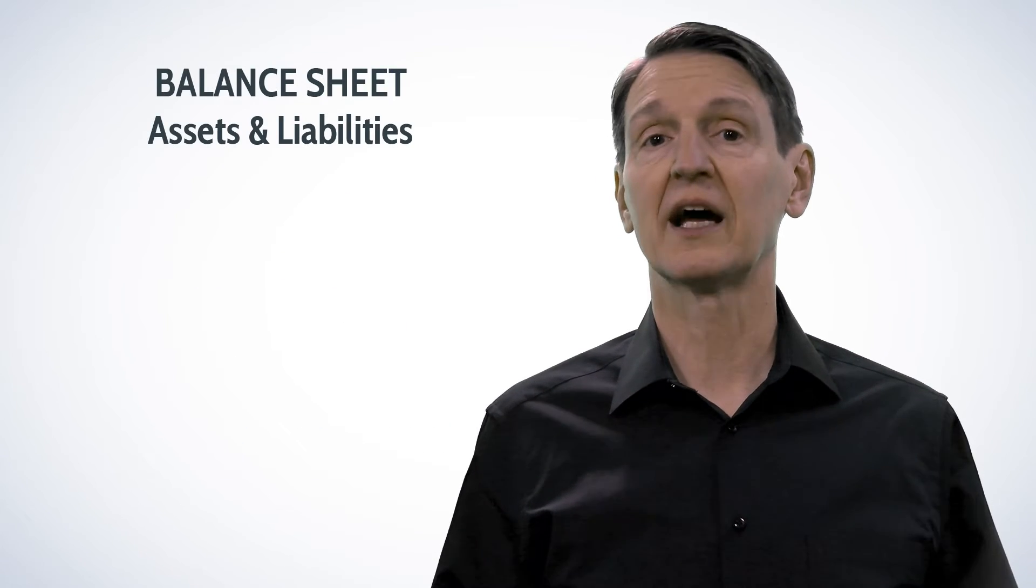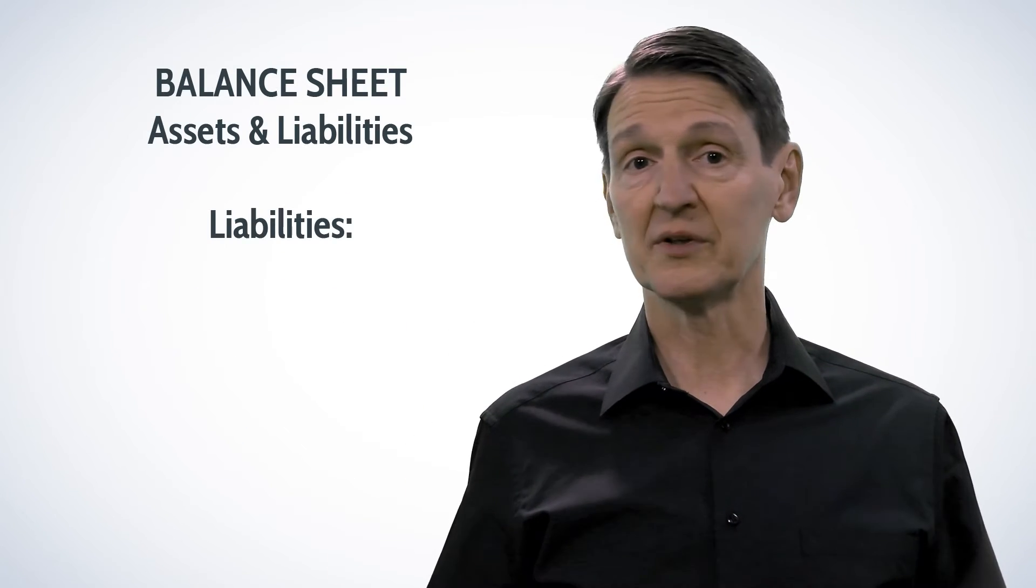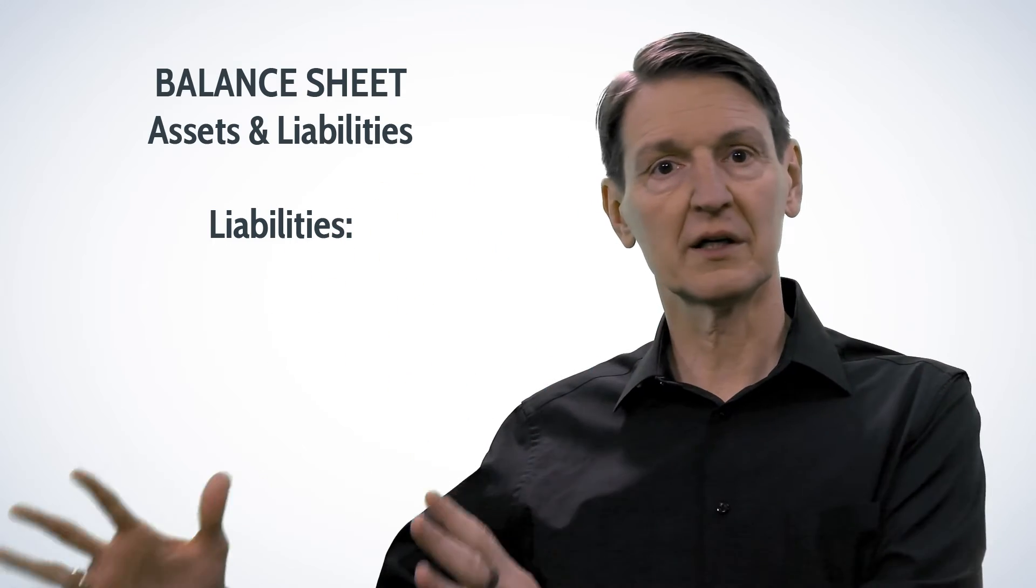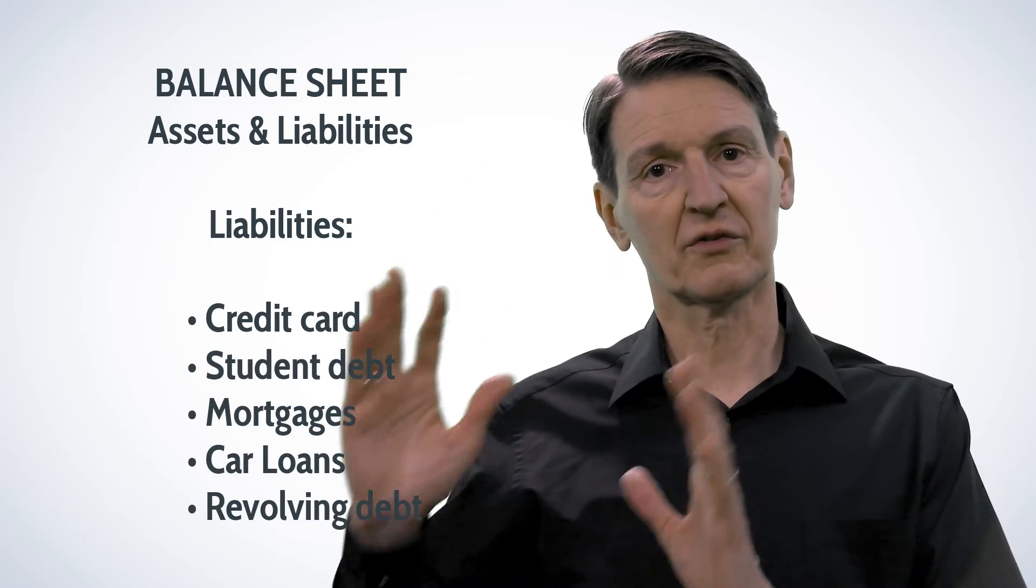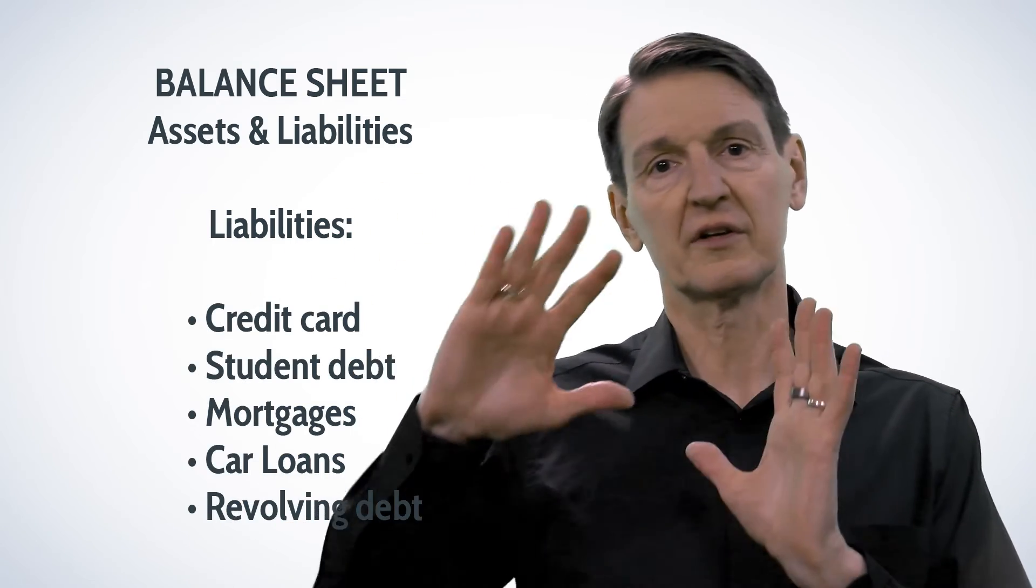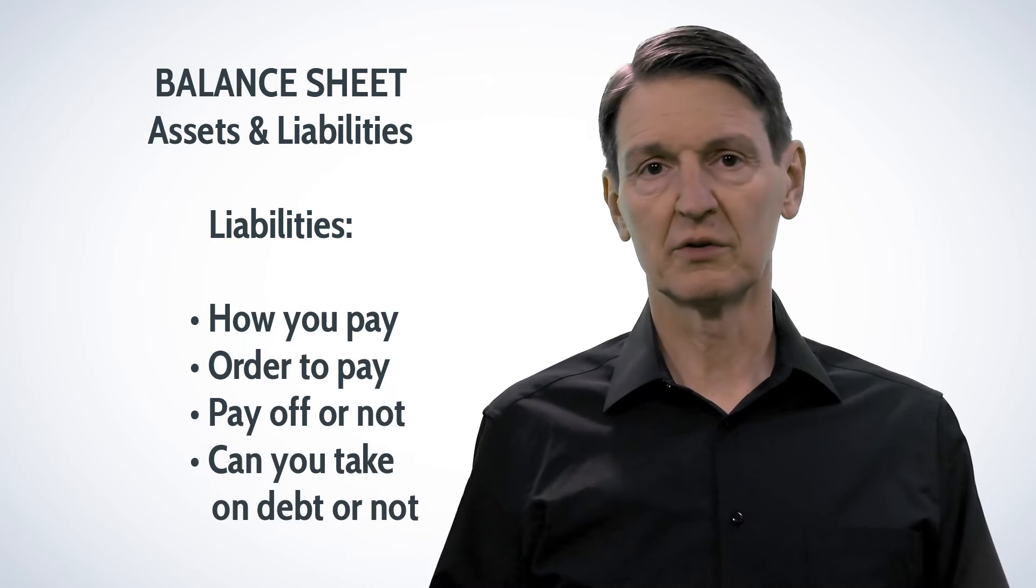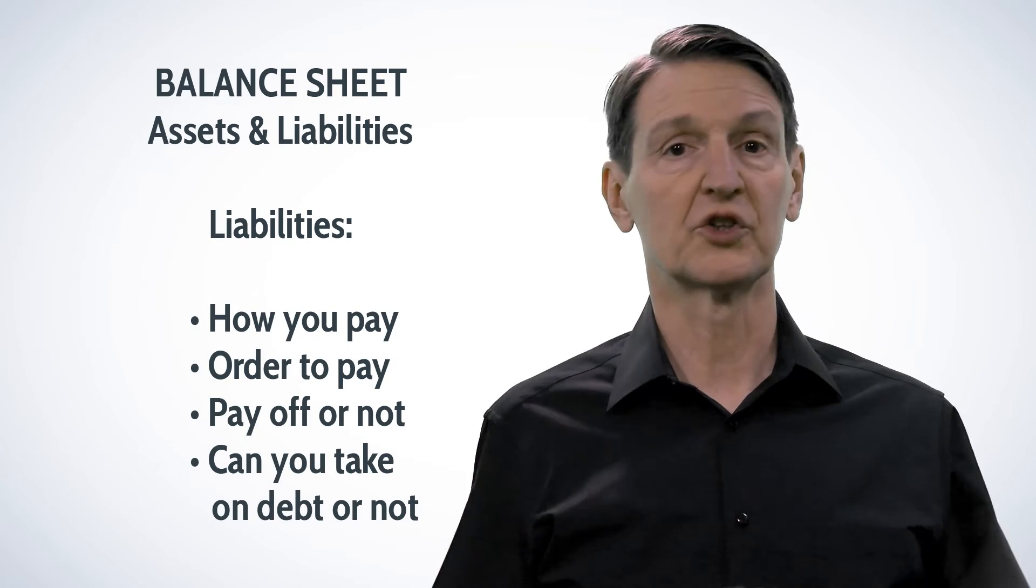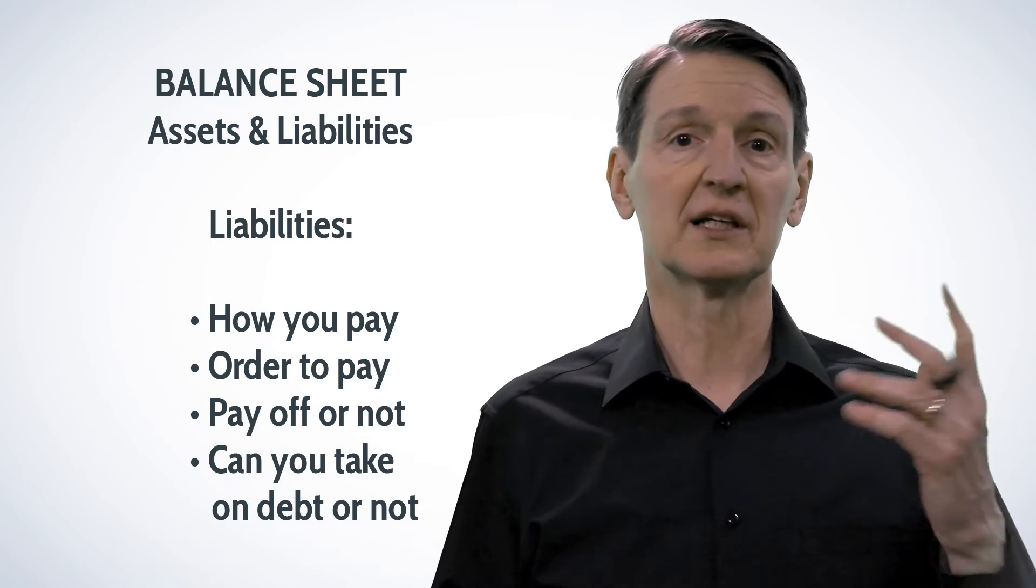And finally, the balance sheet. What's that? Assets and liabilities. Liabilities - that's a whole area of credit cards, student debt, mortgages, car loans, and other revolving debt. How you pay those, in what order. Should you pay them off? Should you not? Can you take on debt or not?